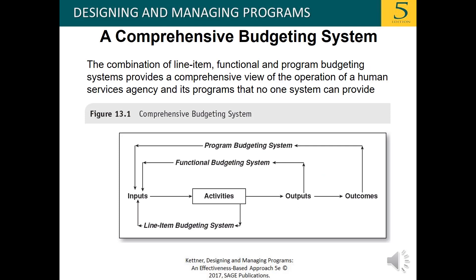With a comprehensive budgeting system — we've seen this figure before — the combination of line item, functional, and program budgeting systems provides a comprehensive view of the operation of a human services agency and its programs that no one system can provide on its own.